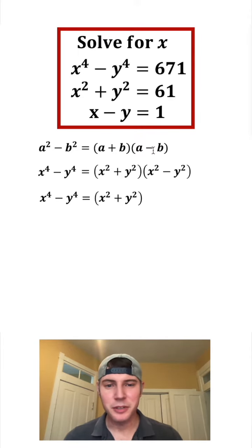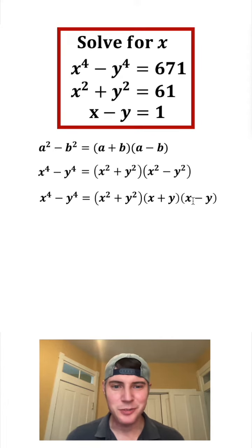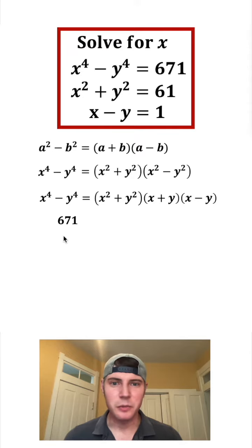And this can be factored based on this. That's going to be x plus y times x minus y. And from here we can plug stuff in. x to the fourth minus y to the fourth is 671.